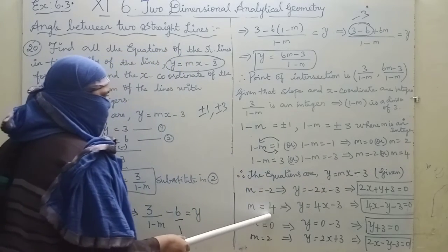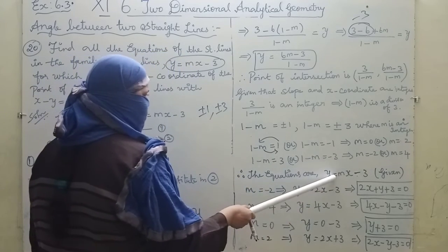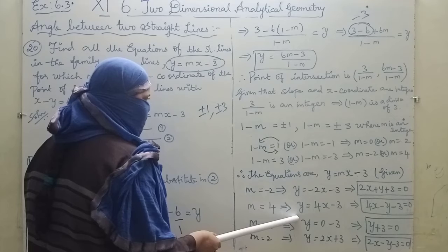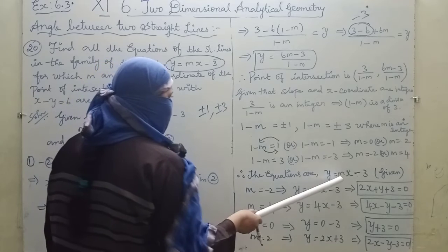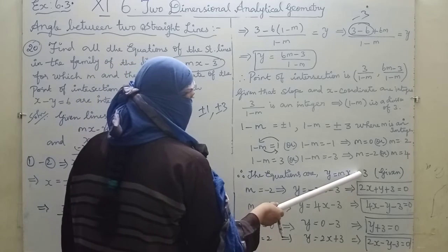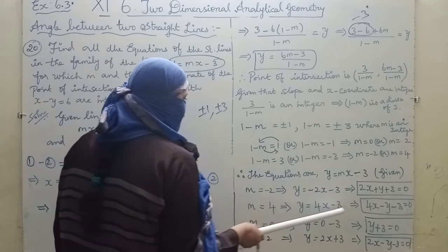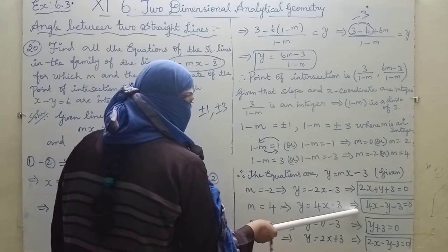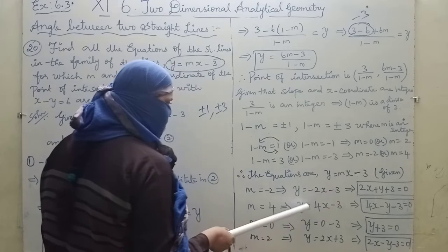Next, m = 4 gives the equation y = 4x - 3.